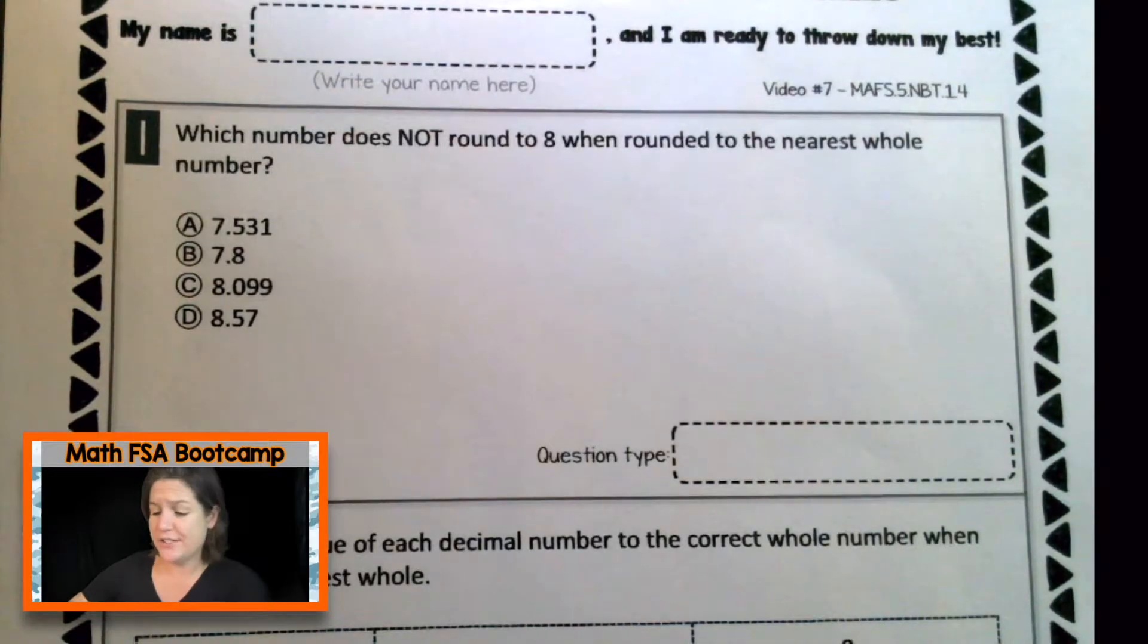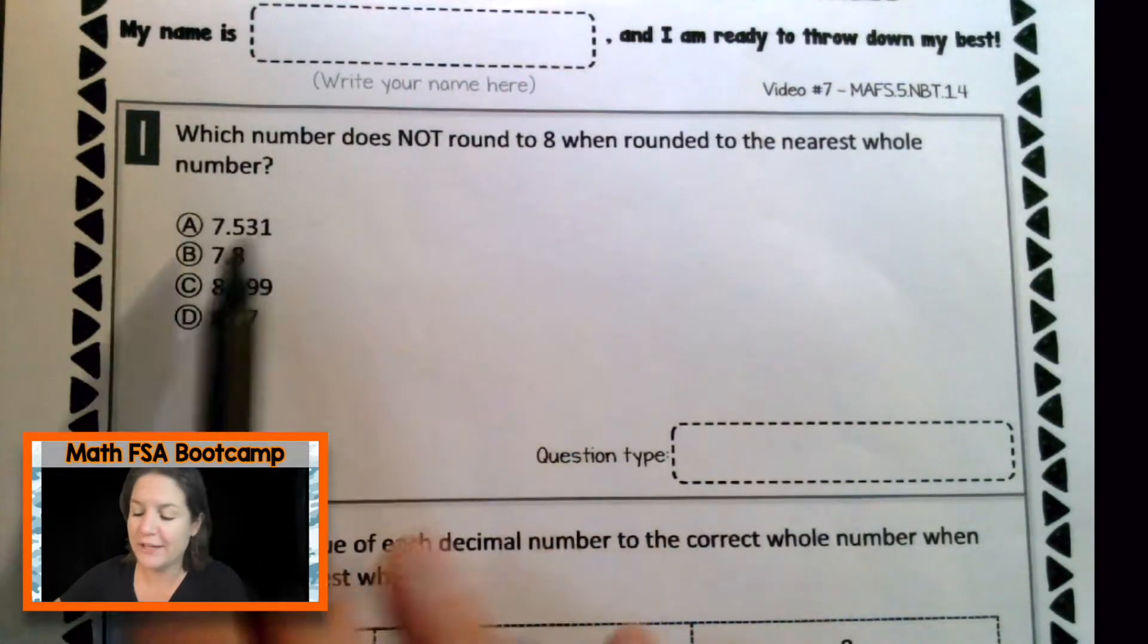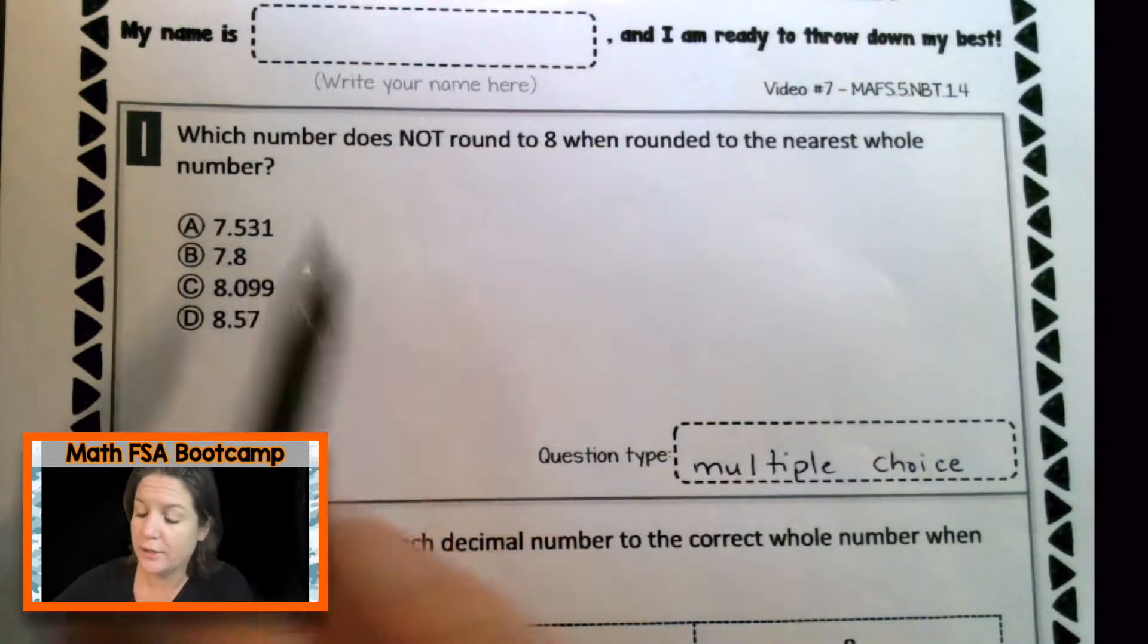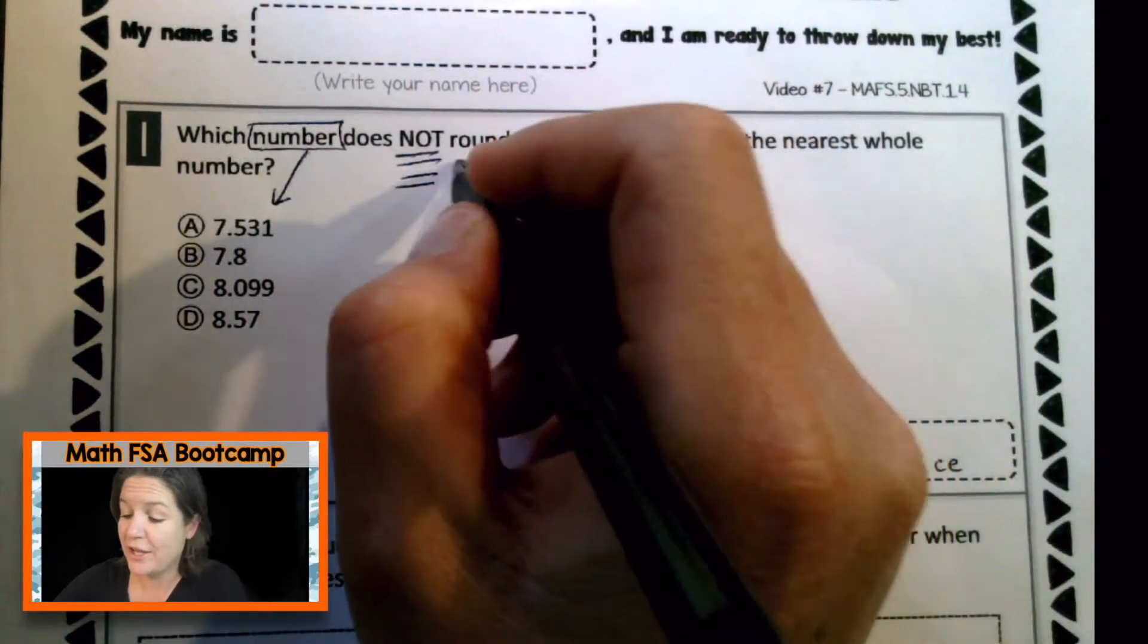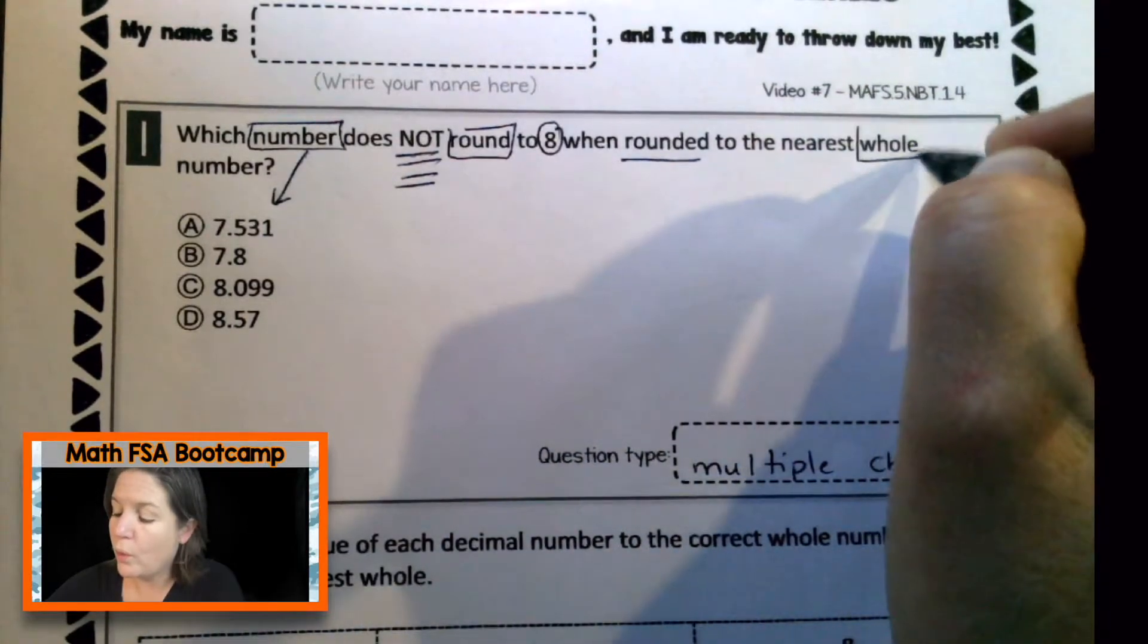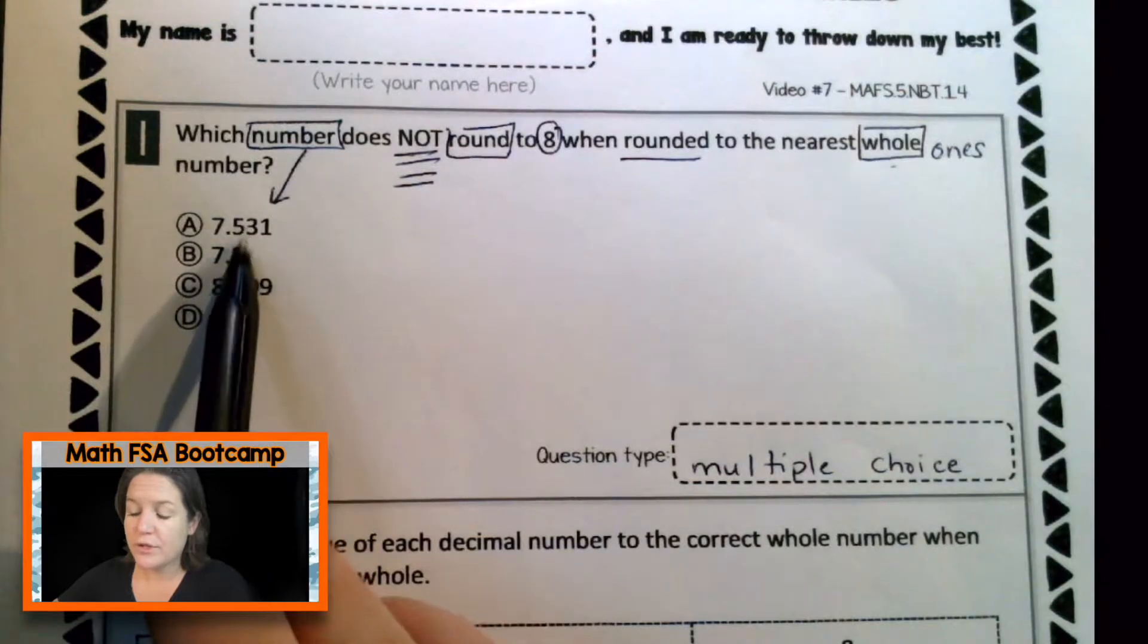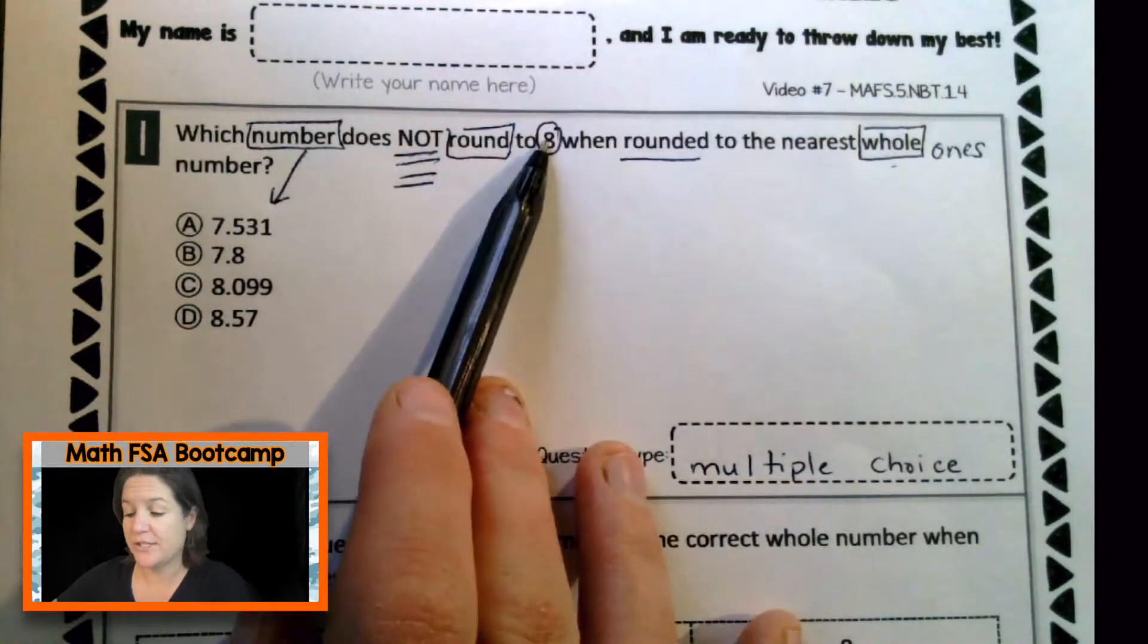Welcome back, fifth grade! Let's see how you did. Of course, first we're going to take a look at the question type. I'm seeing which number does not, just reading it carefully, for answer choices there. So what kind of question do you think this is? Yeah, it's a multiple choice question, so let's write that down. Now let's go through and mark up our question. It says which number, that's which number here, does not, we need to make sure we pay attention to not, does not round to eight. I love rounding. When rounded to the nearest whole number, when we're referring to the whole number, which place are we referring to? The ones place, yes. Okay, so what we're going to do is round all of these numbers with decimals to the nearest ones place, or to the nearest whole, and figure out which one does not round to eight.